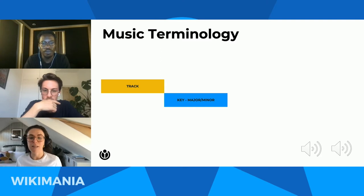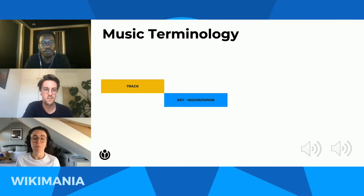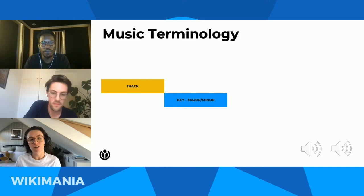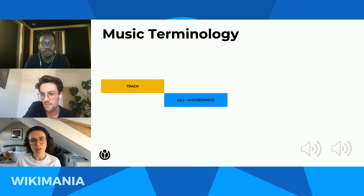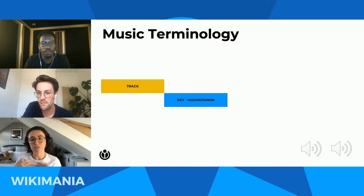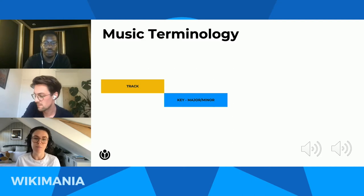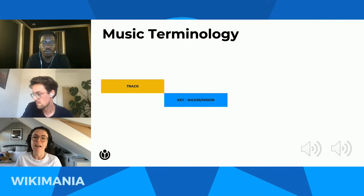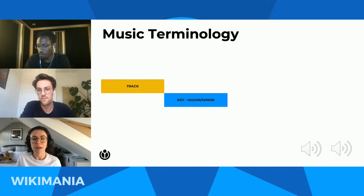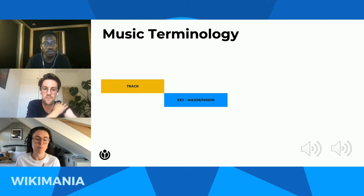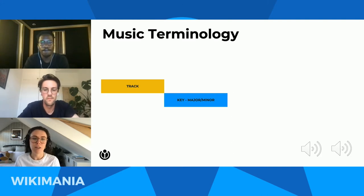Next we have keys — major and minor. These are fundamental when talking about music. We use major and minor keys for our chords, scales, notes, and key signatures. For the purposes of this masterclass, the easiest way to recognize the difference is: if a piece of music sounds happy or bright, it's probably in a major key, and if something sounds sad or melancholy, it's often in a minor key.